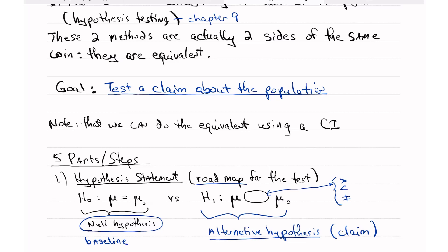So this symbol, H sub zero, sub is the subscript, it's a zero, not a little o. This is mu is equal to mu naught or mu sub zero. So we call this H naught or the null hypothesis. And our hypothesis, the null hypothesis, is that mu is equal to some value, mu naught.